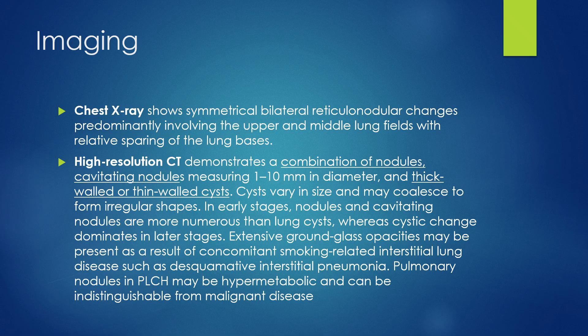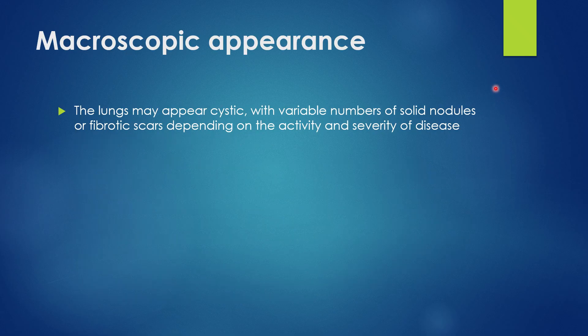Earlier lesions show nodules and cavitating nodules, while as disease progresses, cystic changes become more prominent due to destruction of the bronchial wall. Extensive ground-glass opacities may be present as a result of concomitant smoking-related interstitial lung disease. On PET-CT, it may present as a hypermetabolic lesion, making distinct differentiation from malignant disease difficult. Microscopically, it shows nodules, cysts, as well as scars.